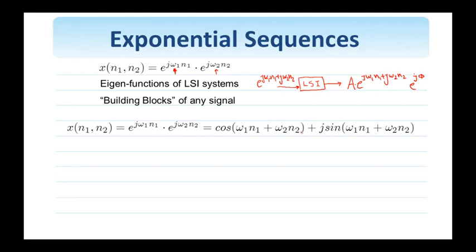Another form to describe these complex exponentials is with the formula attributed to Euler. So e to the j omega 1 n1 times e to the j omega 2 n2 is the polar representation of this complex signal, and this is equal to cosine of the argument plus j sine of the argument — that's the Cartesian representation — where the first term is the real part and the second is the imaginary part. It should be clear from either representation that the magnitude of this complex exponential is equal to 1, since cosine squared plus sine squared equals 1.